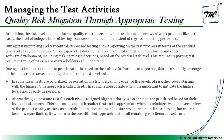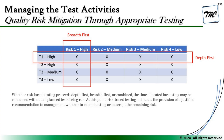Alternatively, in the breadth-first approach, at least one test from each risk is assigned the highest priority, and all other tests are then prioritized based on their risk level. This approach is appropriate when stakeholders want an overall view of product quality as early as possible. We execute one test from each risk in parallel, ensuring we are touching base on every single open risk simultaneously and achieving the required coverage from the whole product point of view.